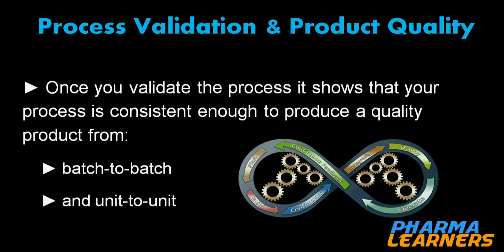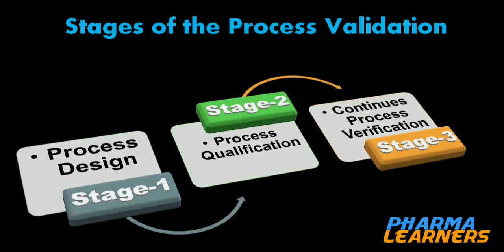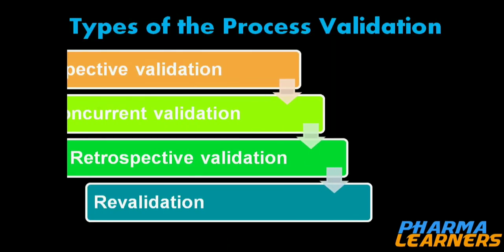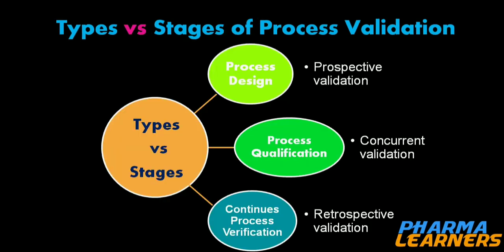Moving on to the various stages of process validation: there are three stages — process design, process qualification, and continuous process verification — and four types: prospective, concurrent, retrospective, and re-validation. I will explain each one and also tell you when and where these different types of validation are to be performed.